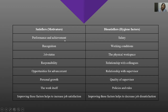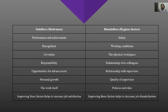Examples of dissatisfiers include salary — working conditions should be good, the physical workspace should be comfortable. Relationships with colleagues are important; good bonding and rapport with supervisors matters. The quality of supervision and the policies of the company, organization, or institution are all hygiene factors. If these are not satisfactory, dissatisfaction results.